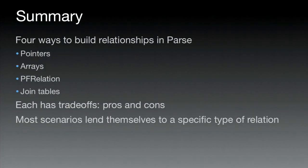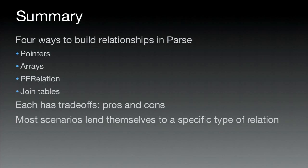To sum up, there are four ways to build relationships in Parse. Pointers, which are really simple — you start with them in the Parse quick start. Arrays, which are awesome when the size is constrained and predictable, or when you need to maintain order. Parse relation, which results in tight, understandable code and is great in the data browser. And join tables, which are best when you want to keep track of metadata about the relationship between two objects. Each has trade-offs, but most scenarios in your app will naturally lend themselves to one of these four types.